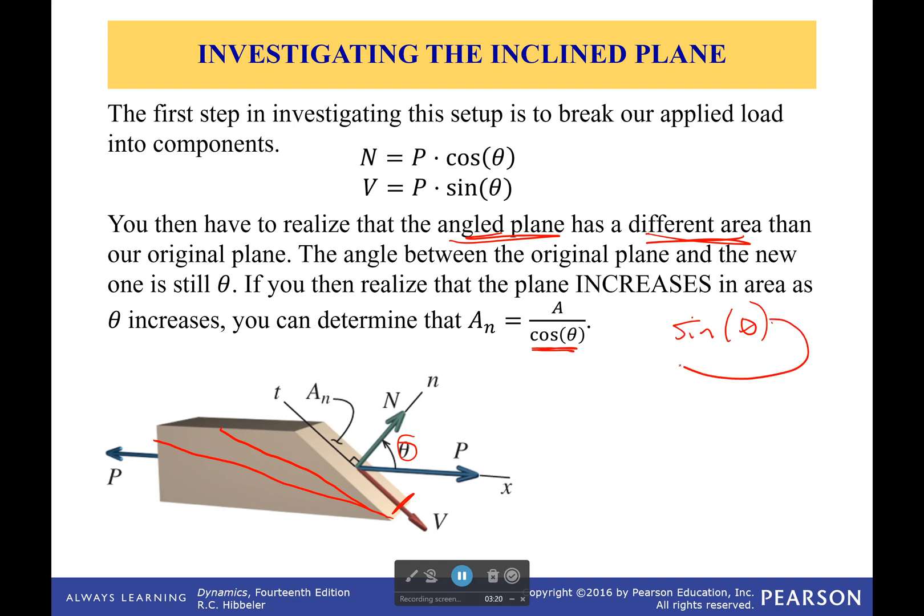Sine of theta would make this smaller as our angle increases. Because sine of theta begins to go to a maximum, while cosine of theta goes to a minimum at 90 degrees. And so, you would see A over sine of theta would have been infinite if theta is zero instead of equaling A.